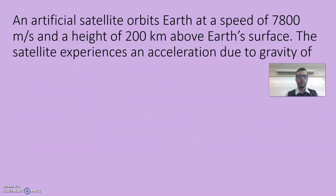We're given a speed and a height above the Earth's surface. The satellite experiences an acceleration of gravity of, so we're trying to figure out the new acceleration due to gravity. Centripetal acceleration is v² over R. Now, if you think about it, if you're moving in a circle around a planet, the centripetal acceleration is caused by the acceleration due to gravity.